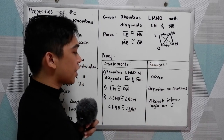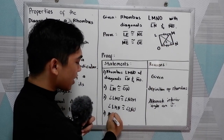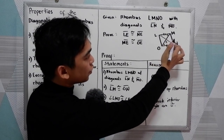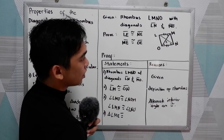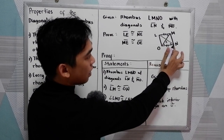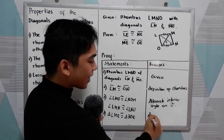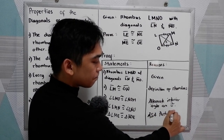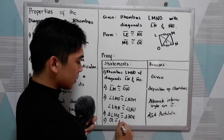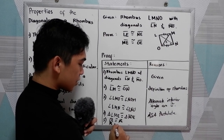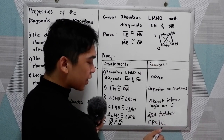Number four, notice that we have angle-side-angle. So triangle LME is congruent to triangle NOE by the angle-side-angle postulate. And fifth, LE is congruent to NE, and ME is congruent to OE. That is by CPCTC — congruent parts of congruent triangles are congruent.